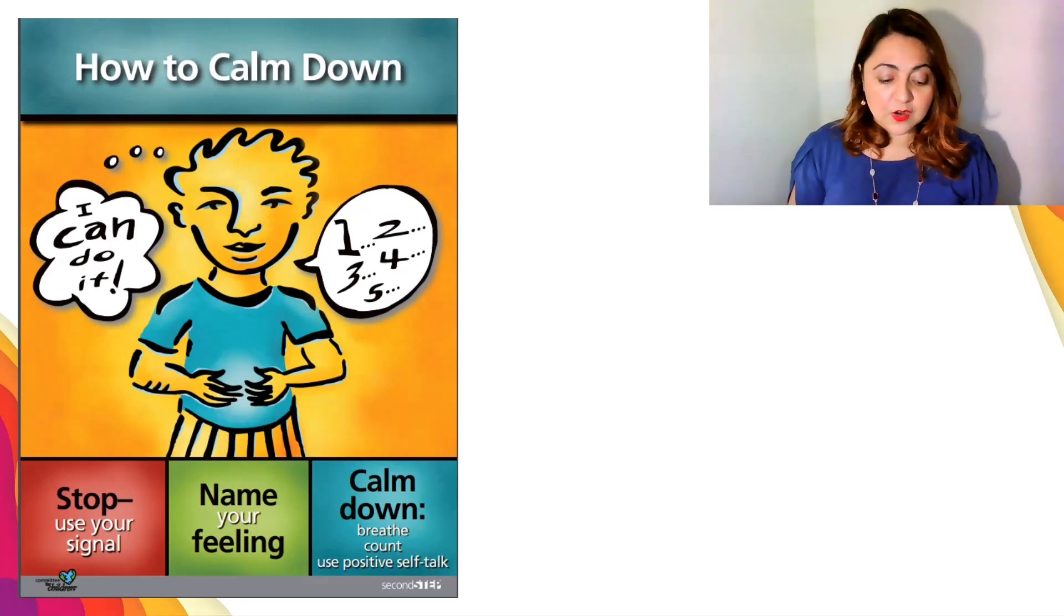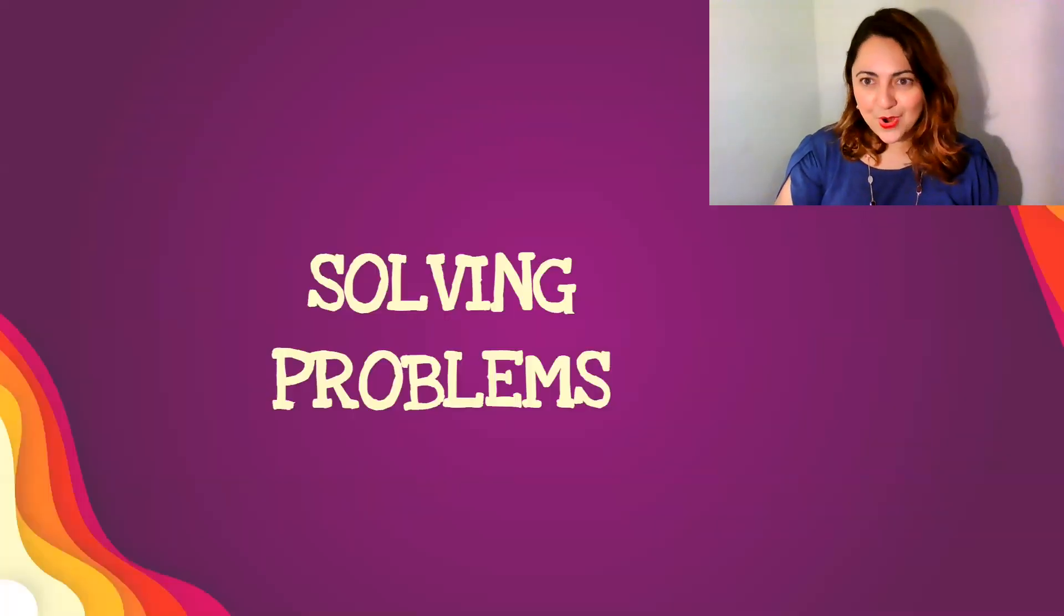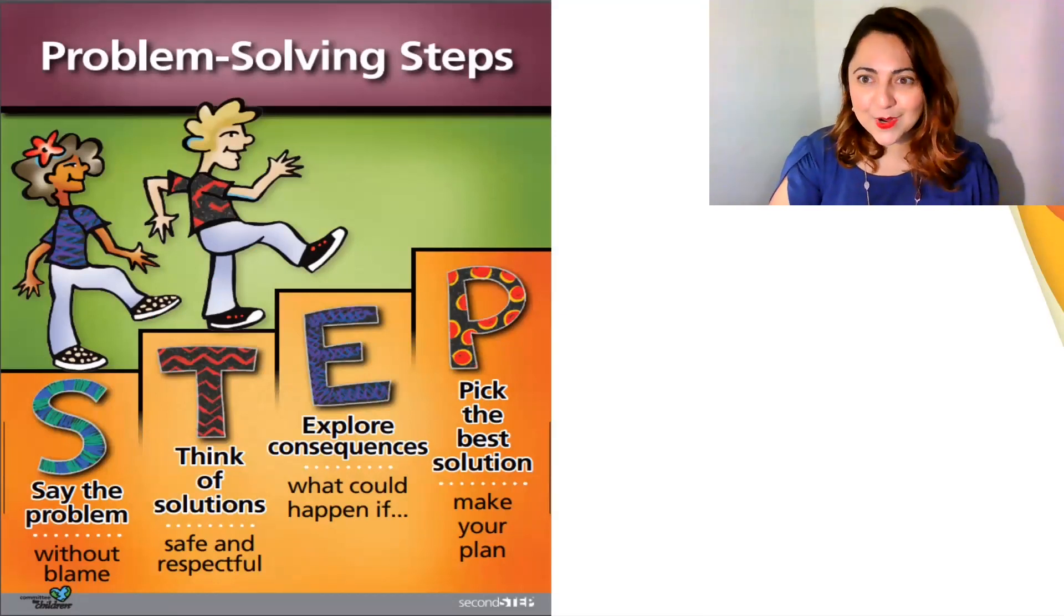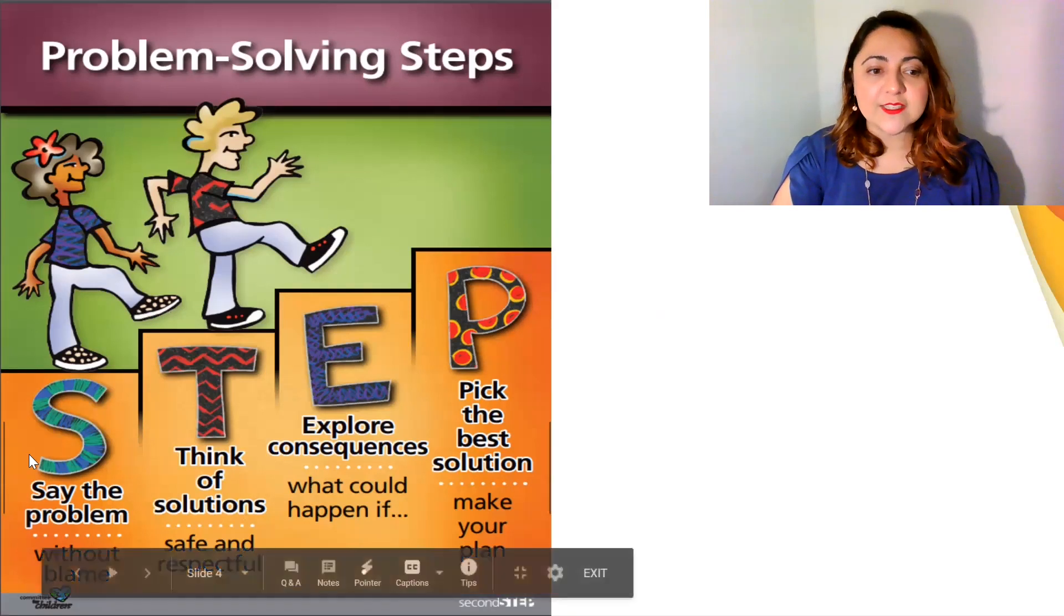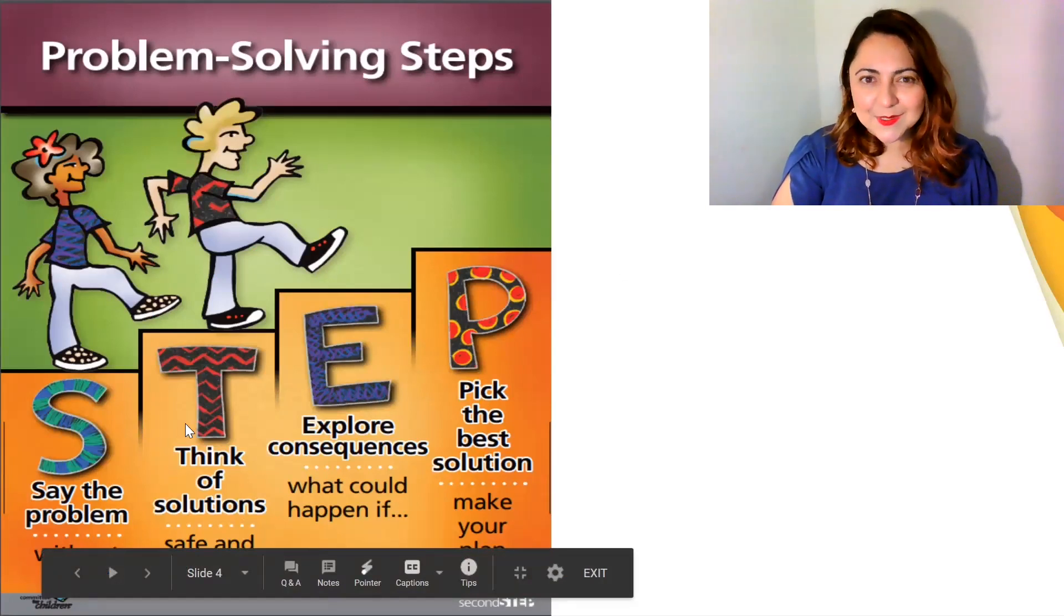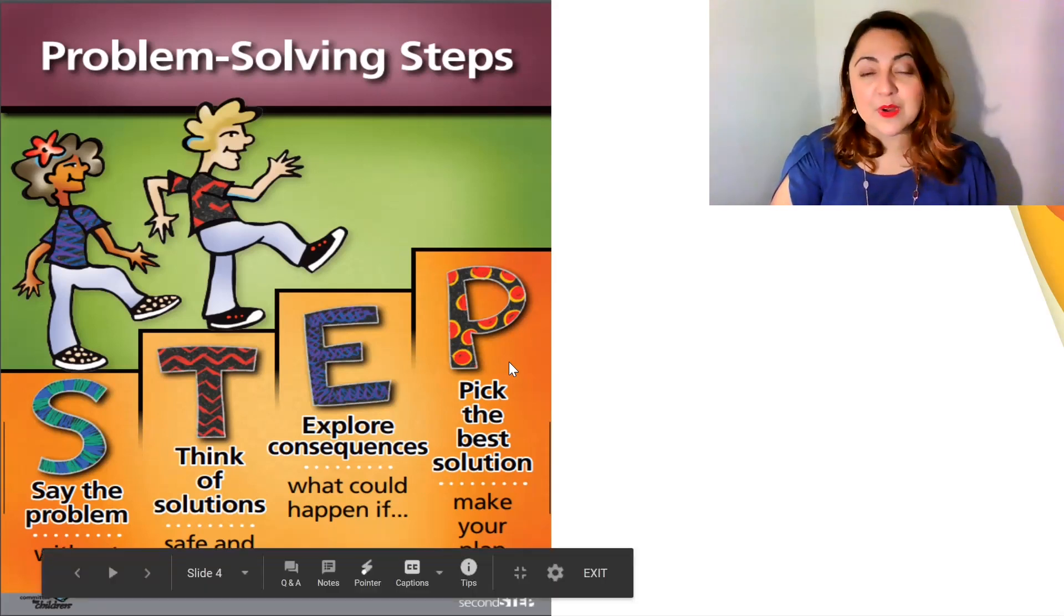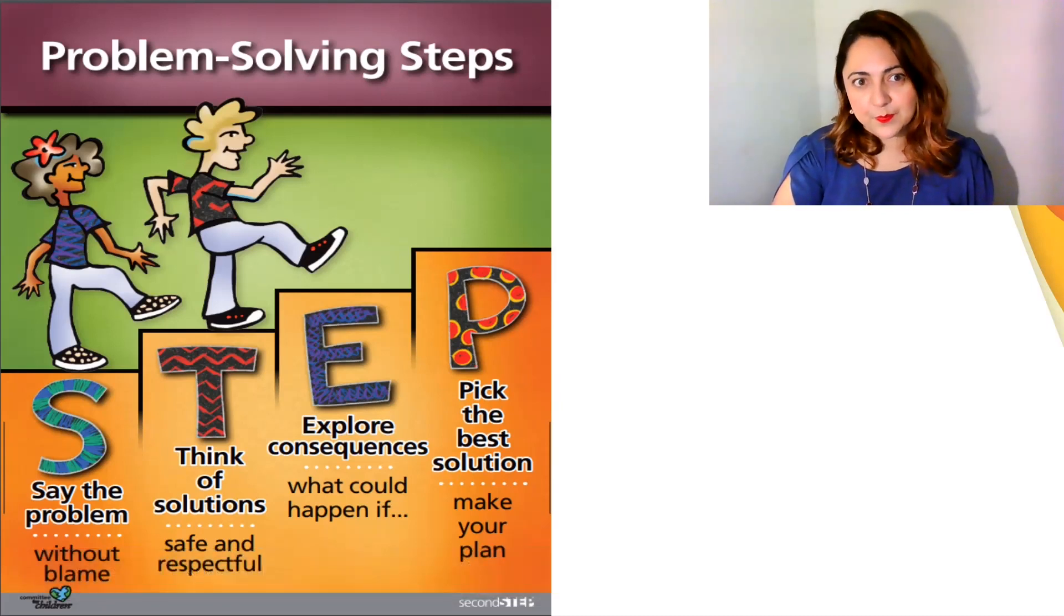Today, we're going to learn about solving problems. When we solve problems, it is helpful to have some steps to follow. These are the steps that we're going to learn. If you notice, each one of the letters that spell STEP means something. The S is to say the problem. The T is to think of solutions. The E is to explore consequences. And the P is to pick the best solution. Remembering the word STEP will help you remember each one of these steps to solve problems.